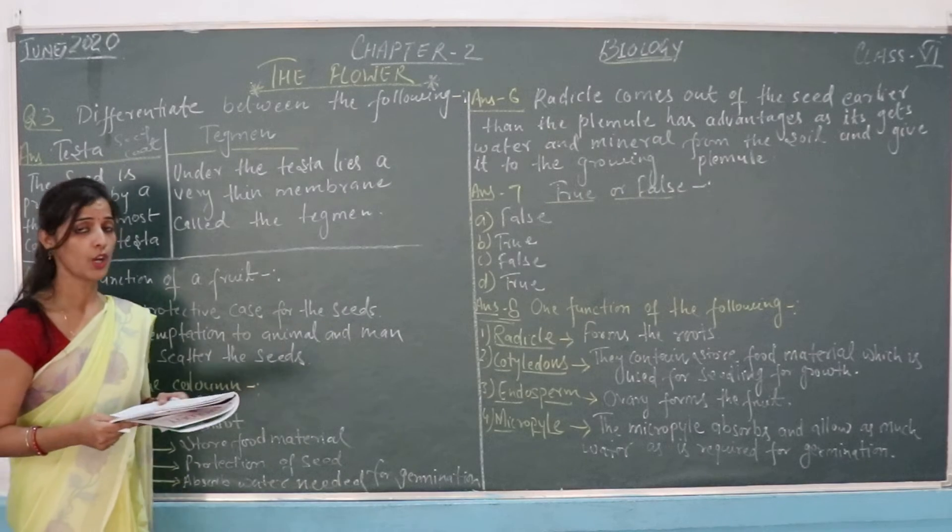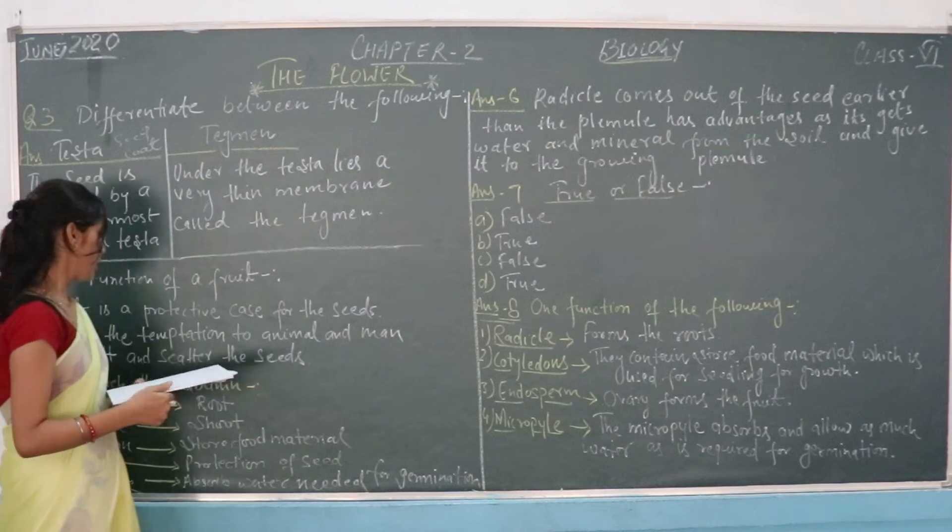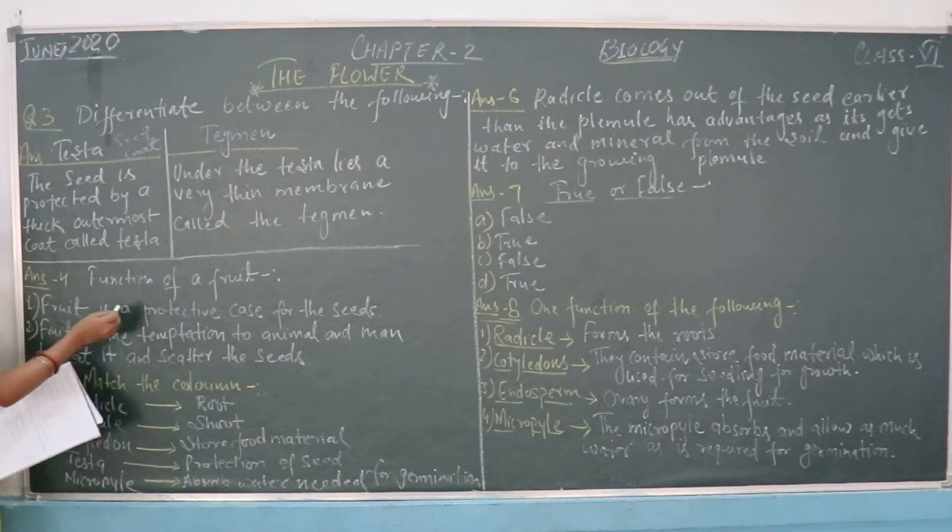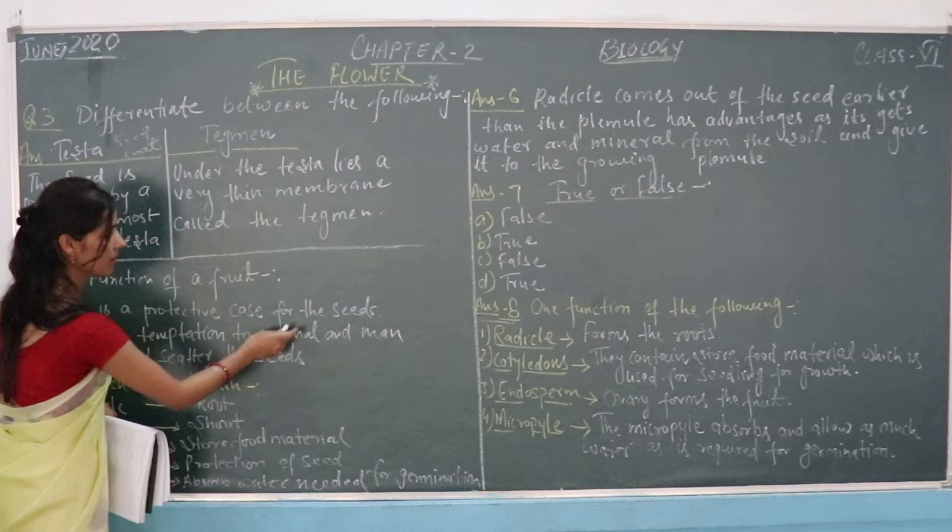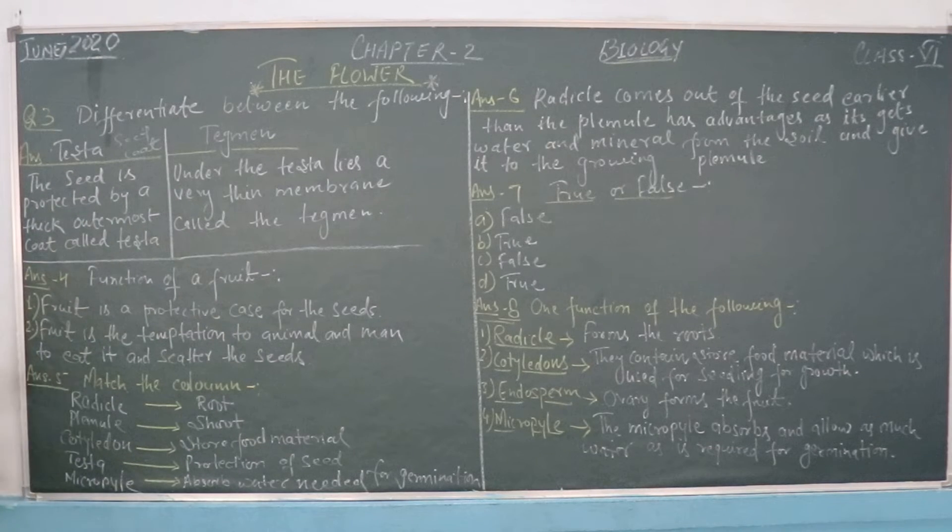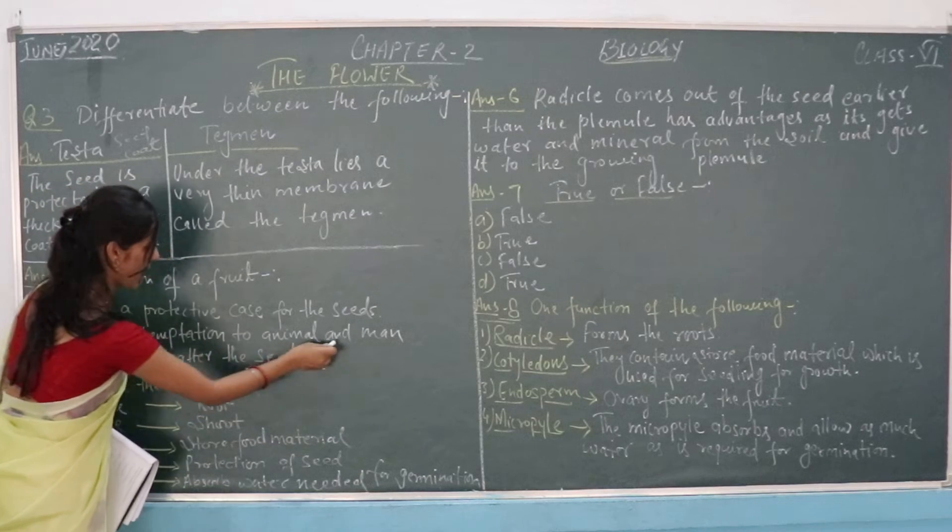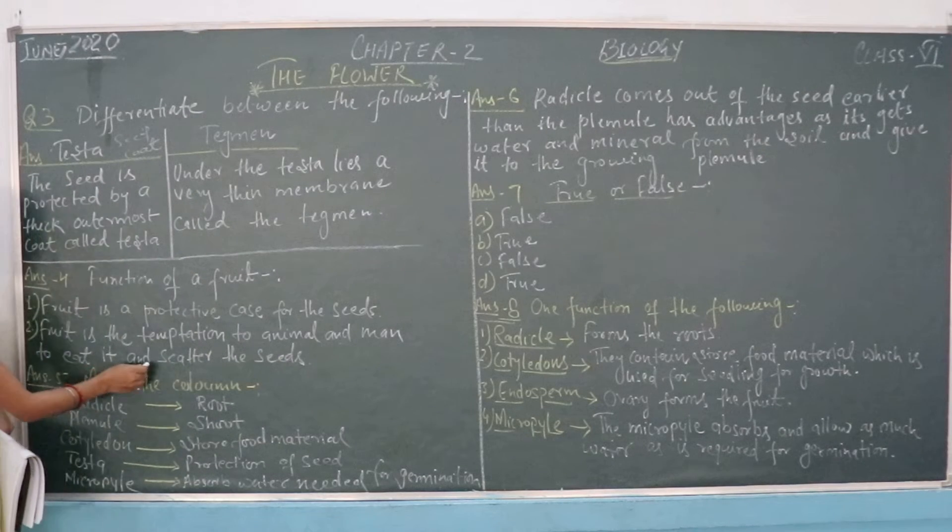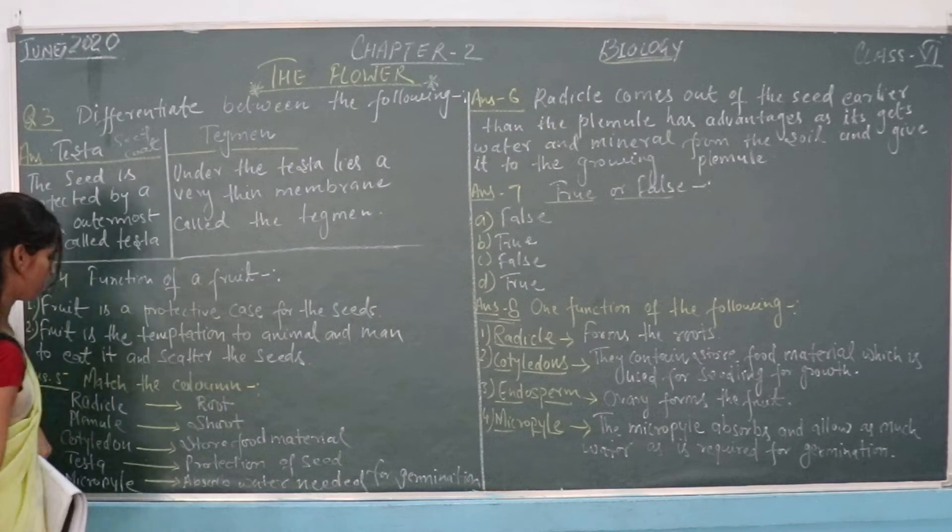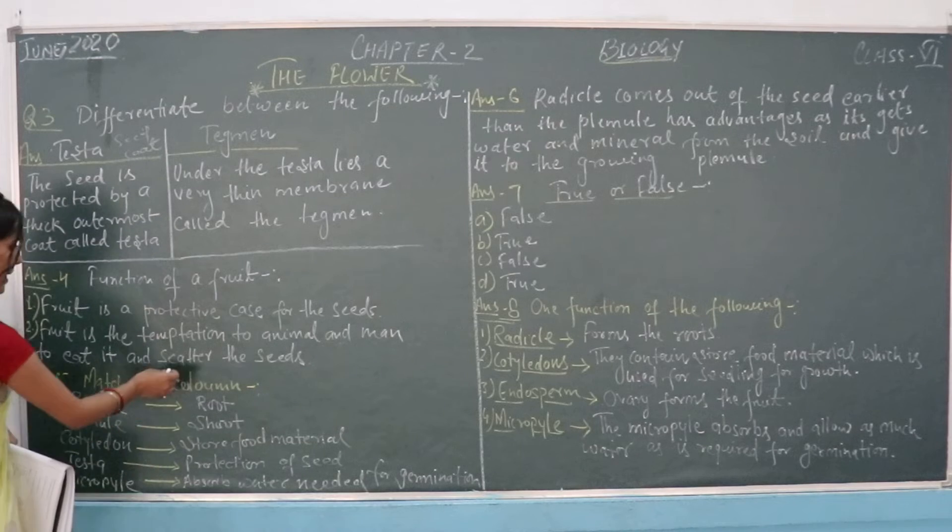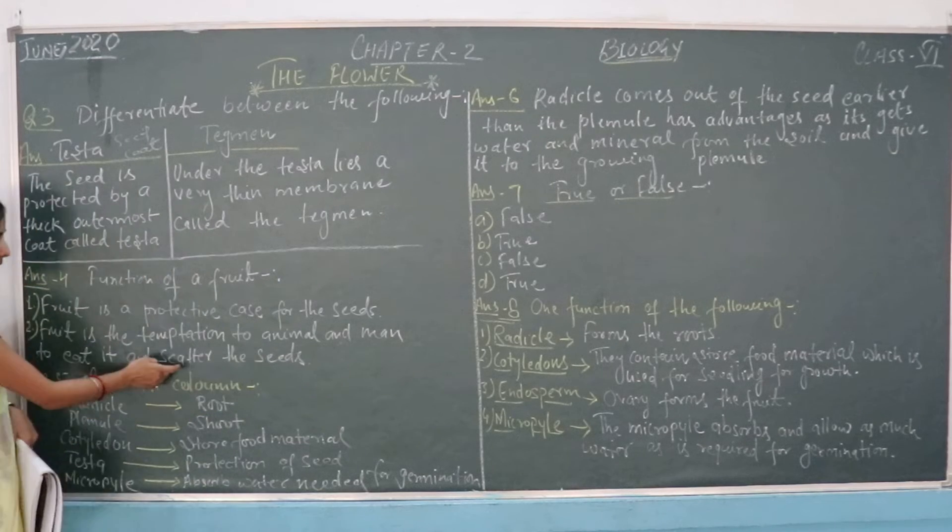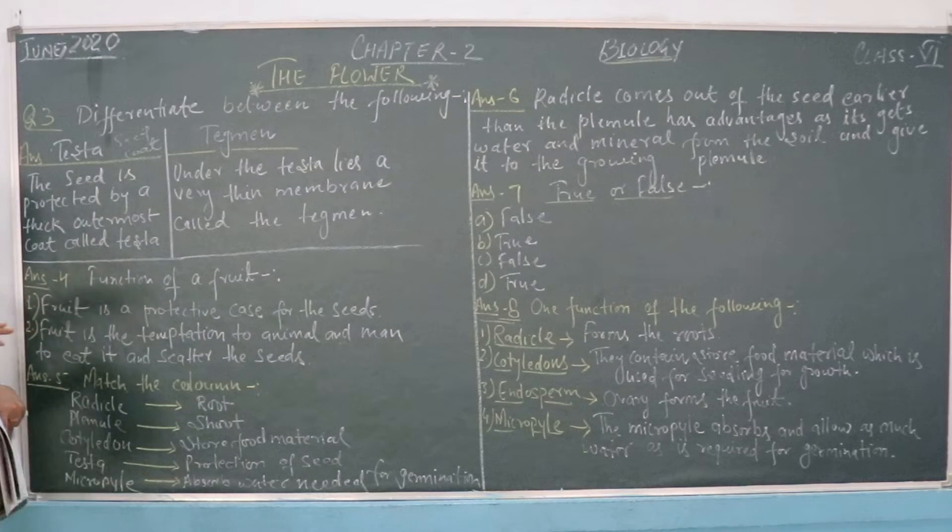Question 4: functions of fruit. The first is the protective case of the seed. Second is the temptation to animals and man, to eat it and scatter the seeds.